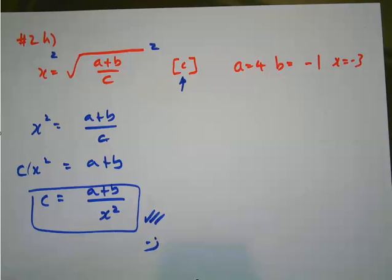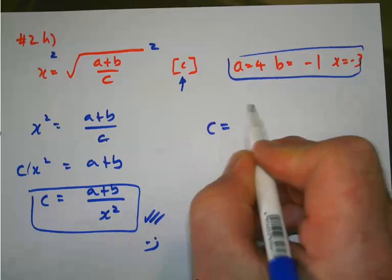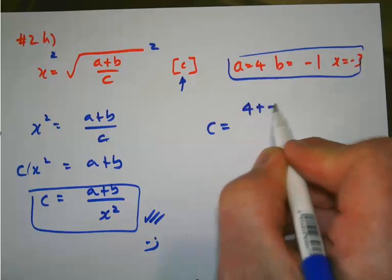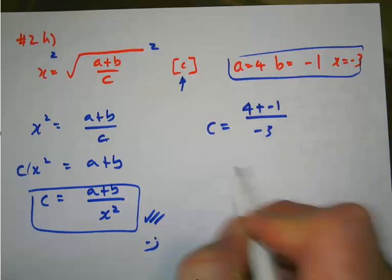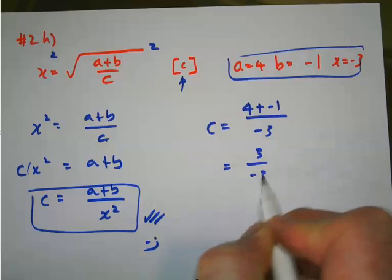And now I need to find out what c equals given these values of a, b, and x. So c equals a plus b, so 4 plus negative 1 divided by negative 3. 3 divided by negative 3, c equals negative 1 is my answer.